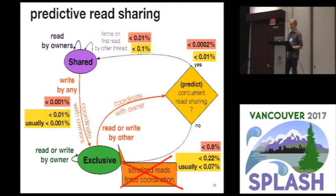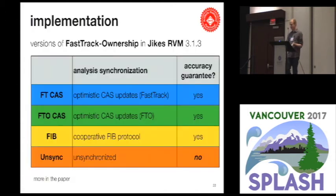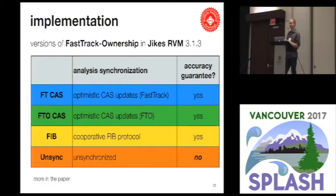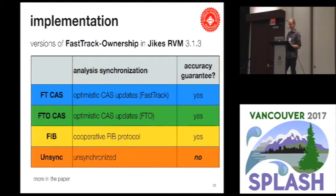That's a brief overview of our protocol and extensions. For our evaluation, we implemented FIB and several other versions of FastTrack in Jikes RVM. I'll discuss four implementation versions: the original FastTrack algorithm with an optimistic CAS-based implementation of analysis synchronization — the best prior option for safe analysis synchronization; FastTrack ownership with a CAS-based analysis synchronization policy; FIB including the preemptive read-sharing optimization; and a completely unsynchronized version of FastTrack — not safe, but giving a baseline for how much we can reduce analysis synchronization overhead.